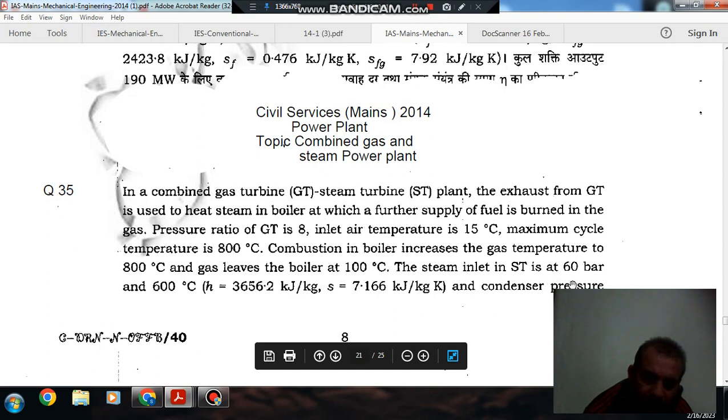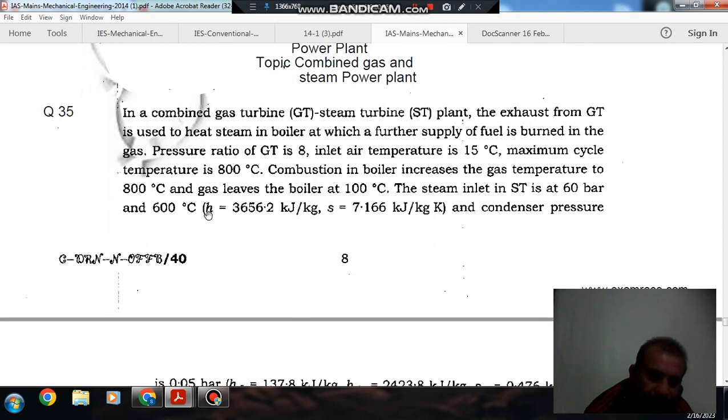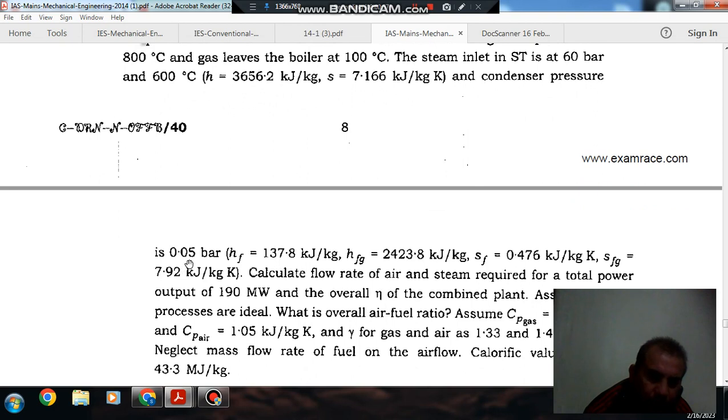The steam inlet in steam turbine is at 60 bar and 600°C. H5 = 3656.2 kJ/kg, S5 = 7.166 kJ/kg·K. And the condenser pressure is 0.05 bar. H7 = 137.8 kJ/kg, H fg = 2423.8 kJ/kg, S f = 0.476 kJ/kg·K, and S fg = 7.92 kJ/kg·K.